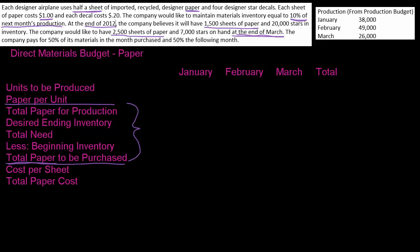We're going to start with units to be produced. Up here in the corner I've got my production — we got this right off the production budget, so if you watched the production budget video these numbers should look really familiar. I'm going to write that in: 38,000 for January, 49,000 for February, 26,000 for March, and then my total is 113,000. That's right off the production budget. Now the second line asks us for paper per unit.